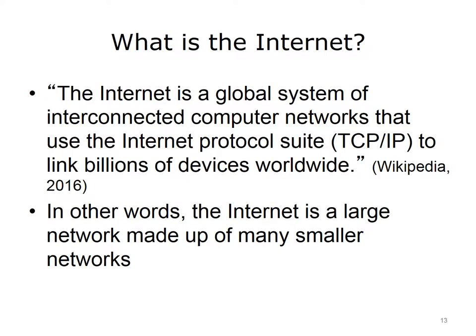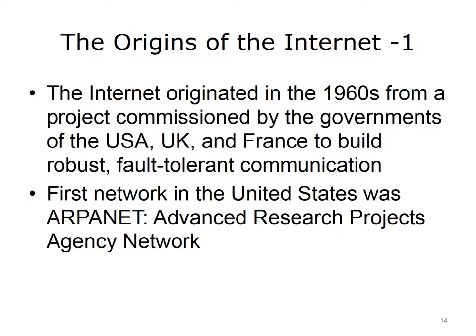But what exactly is the Internet? According to Wikipedia, the Internet is a global system of interconnected computer networks that use the Internet Protocol Suite — Transmission Control Protocol/Internet Protocol, or TCP/IP — to serve billions of users worldwide. So the Internet is a large network made up of many smaller networks. For example, one small city may connect to other small cities, creating a regional network, and that regional network might connect to another regional network, creating an ever-larger network, and so on.